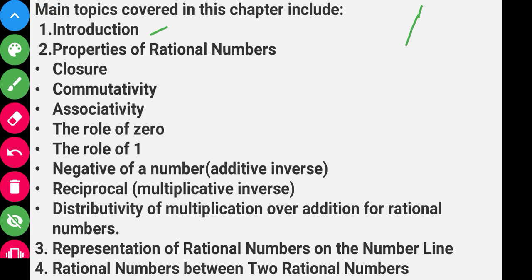We will also cover reciprocal, that is multiplicative inverse, and distributive property of multiplication over addition for rational numbers. The third important point is representation of rational numbers on a number line, and the fourth point is finding rational numbers between two rational numbers.